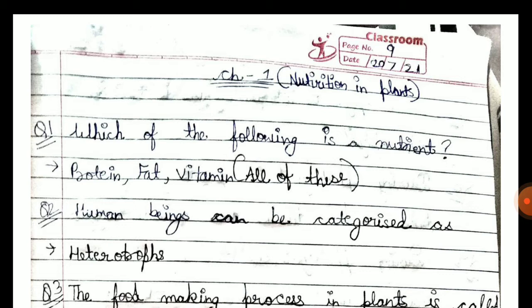Which of the following are nutrients? The nutrients include protein, fat, and vitamins. That means all of these — proteins, fats, vitamins — are nutrients. All of these is the answer.